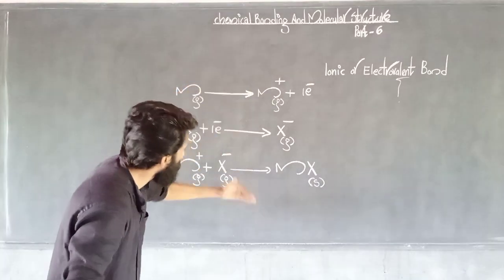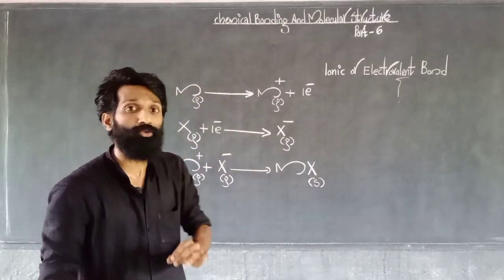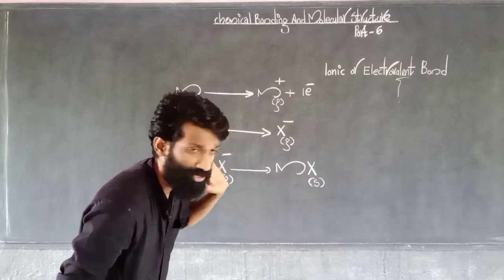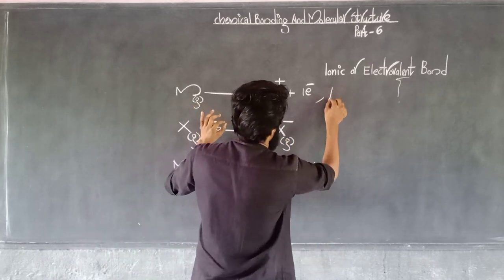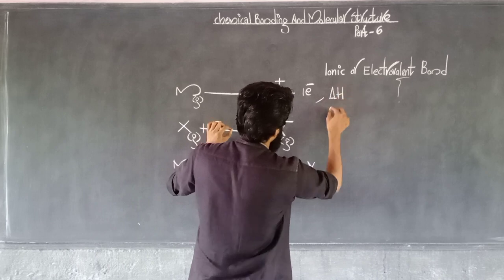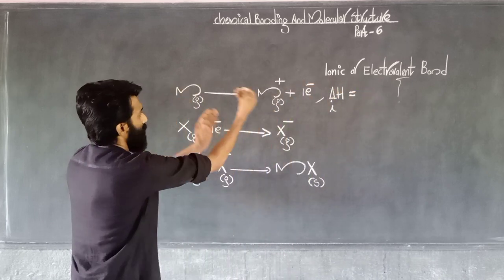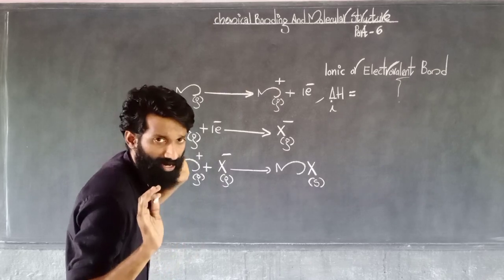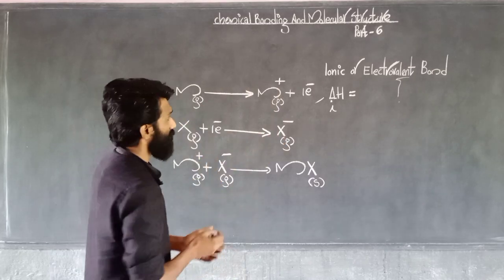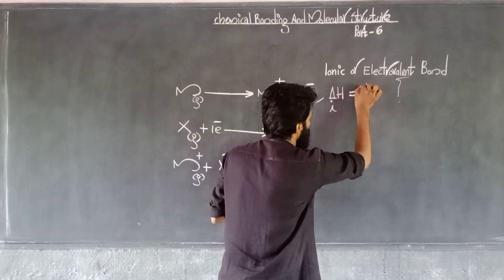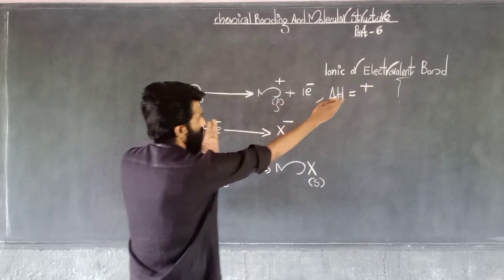Then in three steps we can form an ionic compound. When you form the ionic compound, energy is involved. That value can be positive or negative depending on the step.